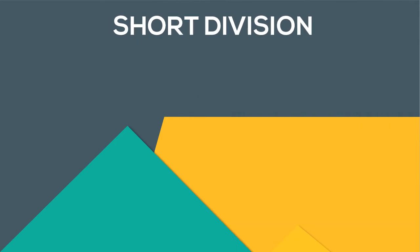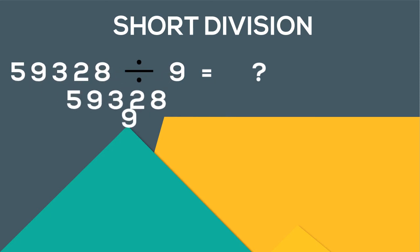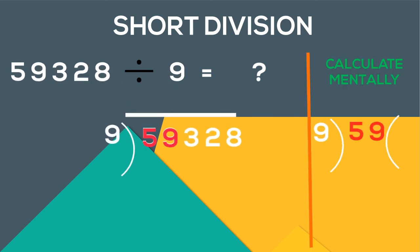Final example: 59328 divided by 9. Here 9 goes 6 times in 59 with the remainder of 5. So 6 goes up and 5 goes at the bottom.